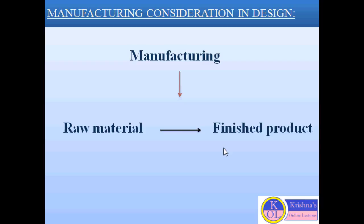The design of product, selection of material, and processing of raw material into finished product — these all activities are related to each other. So manufacturing is basically the process of converting raw material into finished product. For example, the conversion of steel rod into transmission shaft, or sheet metal conversion of sheet metal into car body or body of automobile, and so many more.